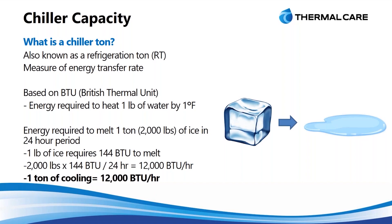Many people I've met over the years who have been in the business for a long time didn't actually know the foundation of this. It comes from a British thermal unit, a BTU — that's a measurement of energy to heat one pound of water one degree Fahrenheit. To get to the chiller ton, we look at 2,000 pounds of ice and how much energy it takes to melt that completely in 24 hours, which works out to about 12,000 BTUs per hour. That's what we call a chiller ton.